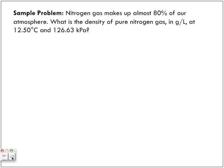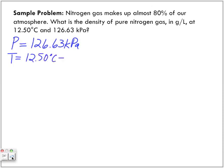Nitrogen gas makes up almost 80% of our atmosphere. What is the density of pure nitrogen gas in grams per liter at 12.50 degrees Celsius and 126.63 kilopascals? Let's isolate the givens. Pressure: 126.63 kilopascals. Temperature: 12.50°C, which we convert to Kelvin — 285.5 K. The 80% figure doesn't play a role in this calculation.